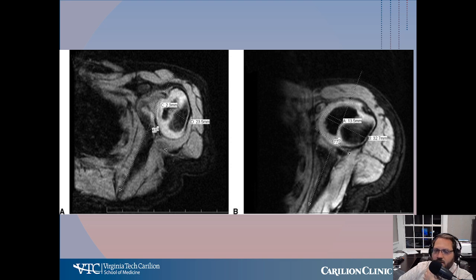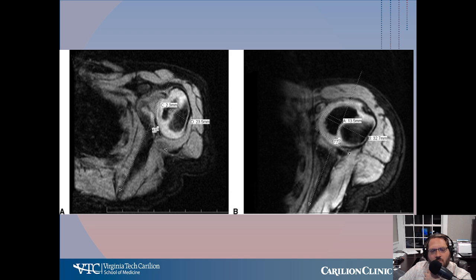Here's an MRI showing some of that dysplasia. As you can see on the left, the shoulder is subluxing posteriorly — it's about 45 degrees retroverted. Compare that to the right, which is a relatively normal shoulder. You can also see how dysplastic the humeral head is as it's going out the back.